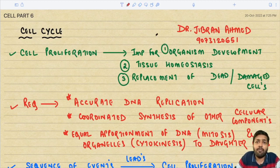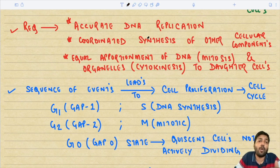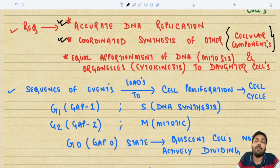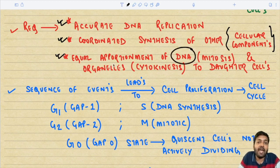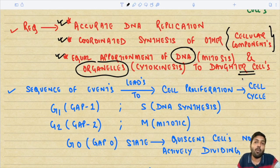Cellular proliferation is very important for the development of an organism, for tissue homeostasis, or for replacement of dead or damaged cells. The requirements for a proper cell cycle include accurate DNA replication, coordinated synthesis of other cellular components such as mitochondria, Golgi apparatus, and endoplasmic reticulum, and equal distribution of DNA and organelles between the two daughter cells.